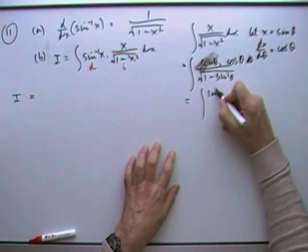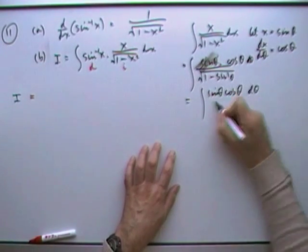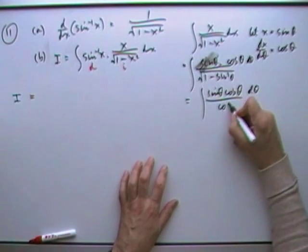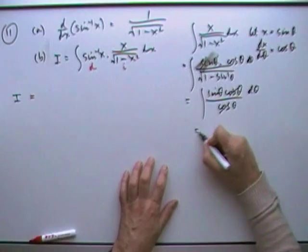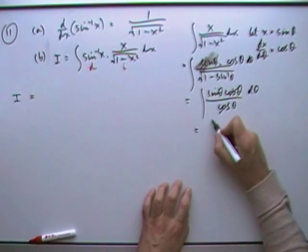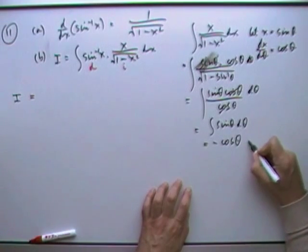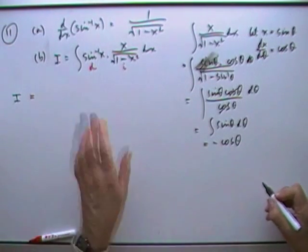So I've got sine theta. You can see what's happening. That cos is going to disappear. Over 1 minus sine squared is cos squared. Square root of cos squared is cos. So I've just got sine theta. So I've got the integral of sine theta d theta, which is negative cos theta plus c. I'll leave the c out just now.